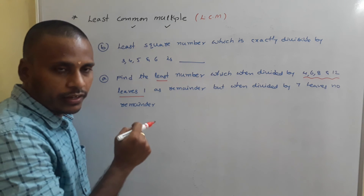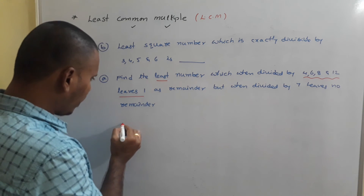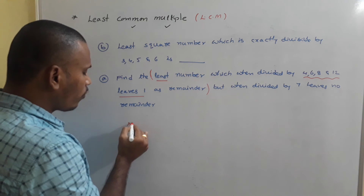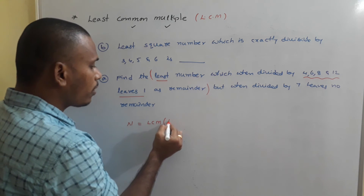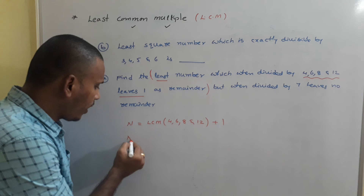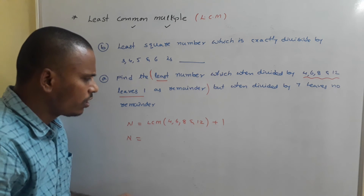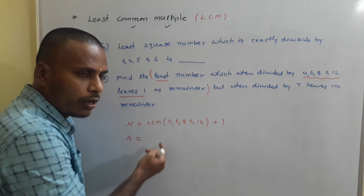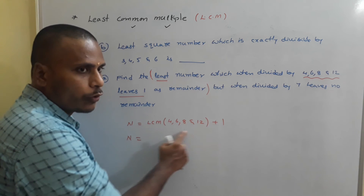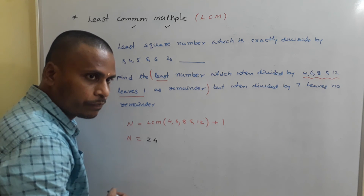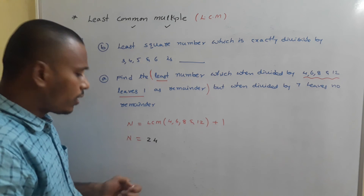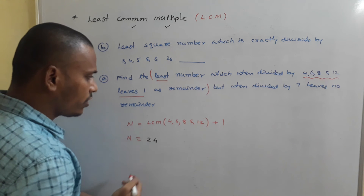This first part is just of the form 13c, where the same remainder is left in each case. So considering only the first condition, n = LCM(4, 6, 8, 12) + 1. LCM of 4, 6, 8, and 12 is 24. So from type 13c, n − 1 = 24, meaning n = 25 as the first candidate.